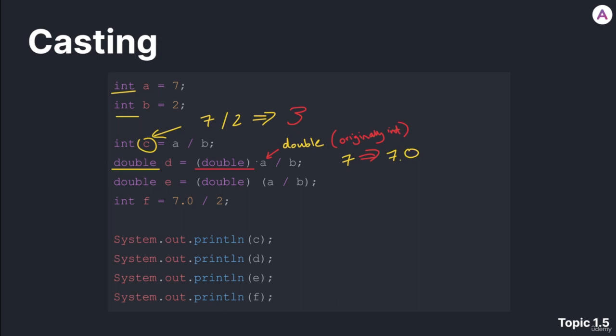Knowing that, we can do a double, the cast, a is casted to double, divided by b. The answer to this would actually be 7.0 divided by the value of b, which is 2.